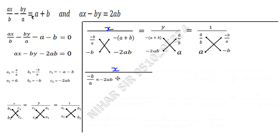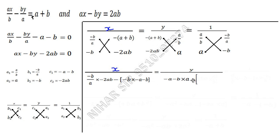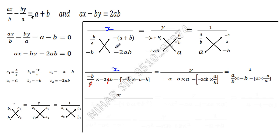Now let us do the multiplication for the x term. We compute (minus b/a) times (minus 2ab), minus (minus b) times minus(a plus b). For the y term: (minus a minus b) times a, minus (minus 2ab) times (a/b). Simplifying: minus b/a times minus 2ab gives 2b squared. For the bracket: minus b times minus(a plus b) gives ba plus b squared.